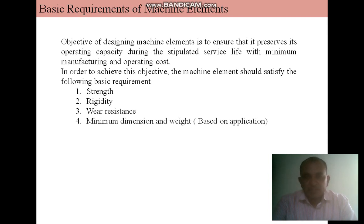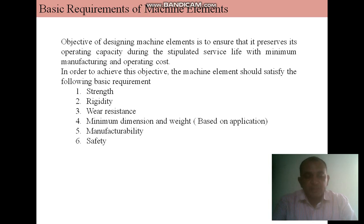The next criterion is minimum dimensions and weight. A machine part should be sufficiently strong, rigid, and wear-resistant while having minimum possible dimensions and weight, resulting in minimum material cost. Next is manufacturability — the ease of fabrication and assembly. The shape and material of the machine part should be selected so that it can be produced with minimum labor cost. The next is safety — the shape and dimensions of the machine part should ensure safety to the operators, and the designer should assume the worst possible conditions and apply the fail-safe principle.